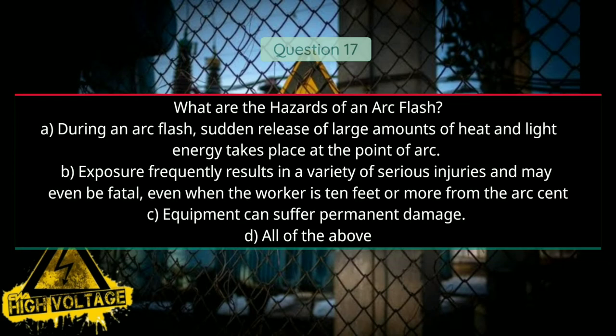Question number seventeen: What are the hazards of an arc flash? Option A: during an arc flash, sudden release of large amounts of heat and light energy takes place at the point of arc. Option B: exposure frequently results in serious injuries and may even be fatal, even when the worker is 10 feet or more from the arc. Option C: equipment can suffer permanent damage. Option D: all of the above. Answer will be D, all of the above.